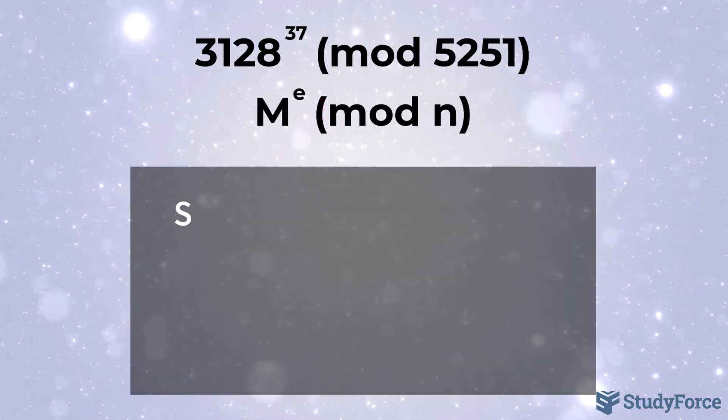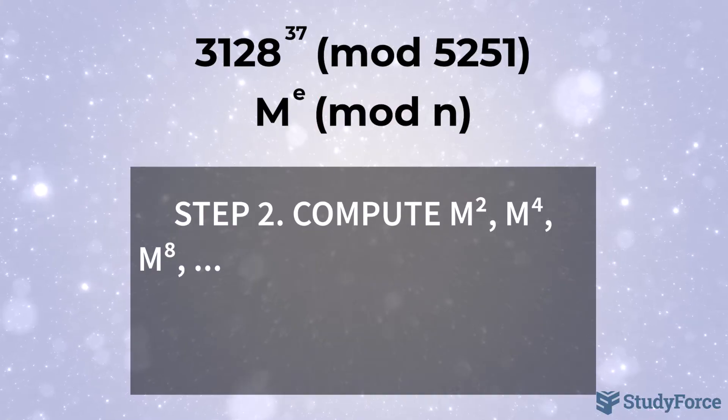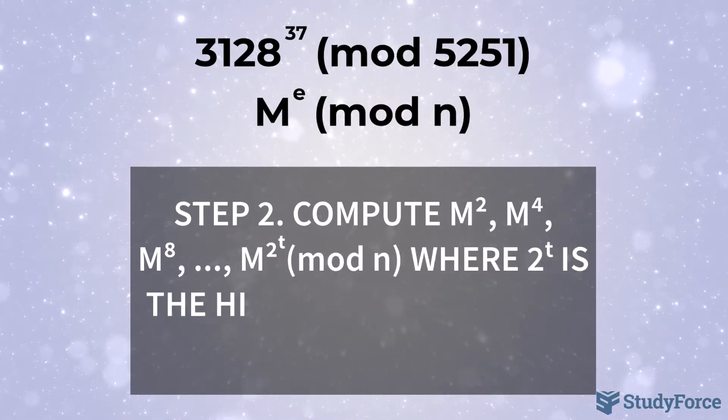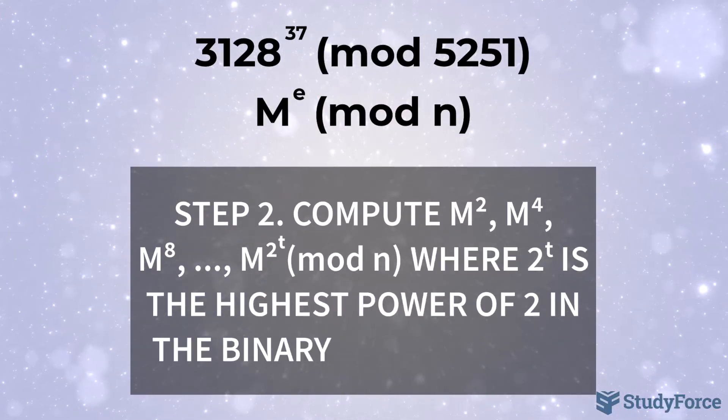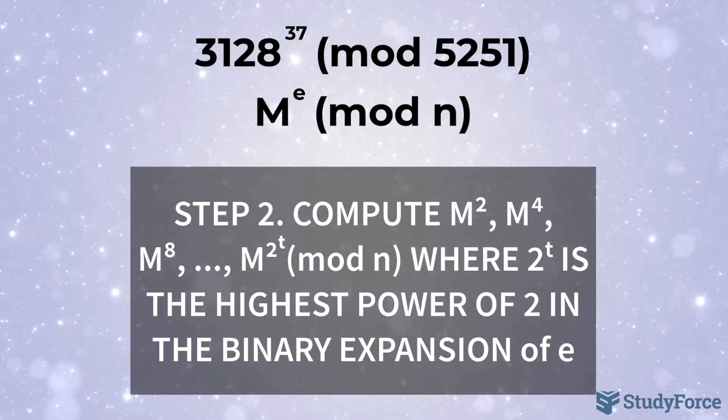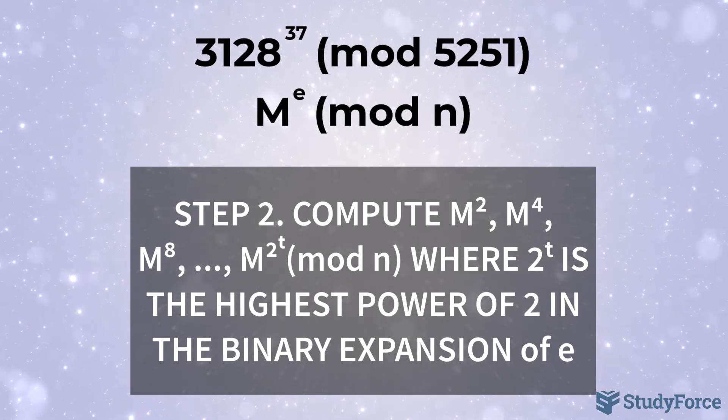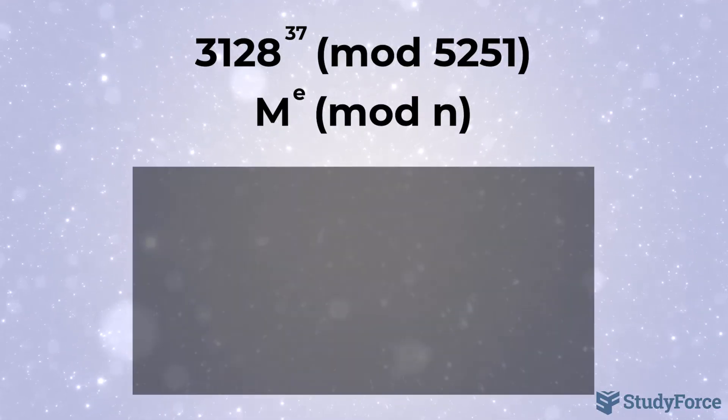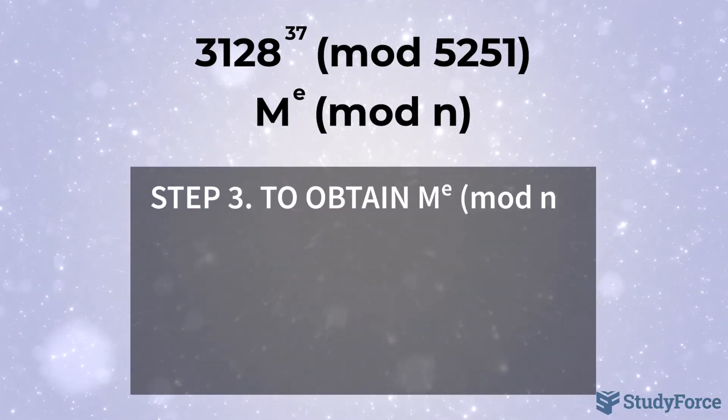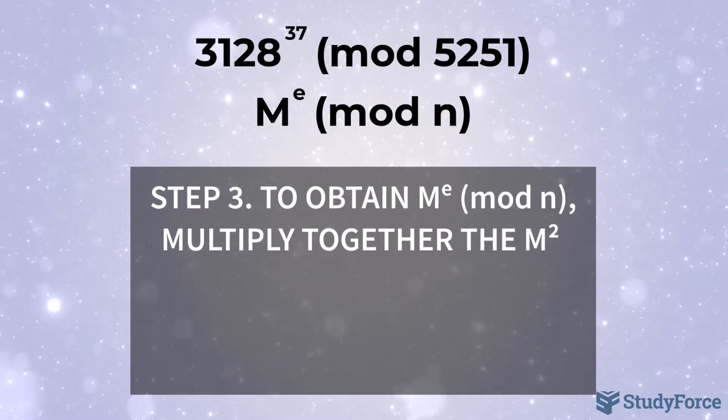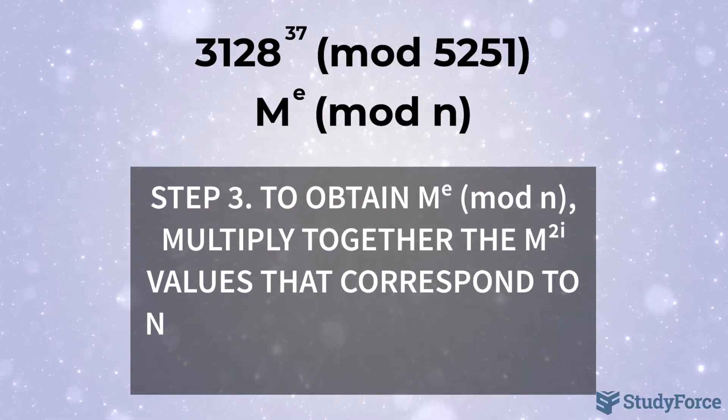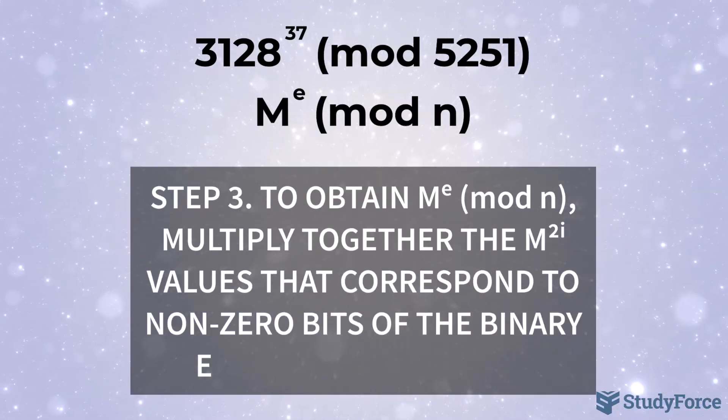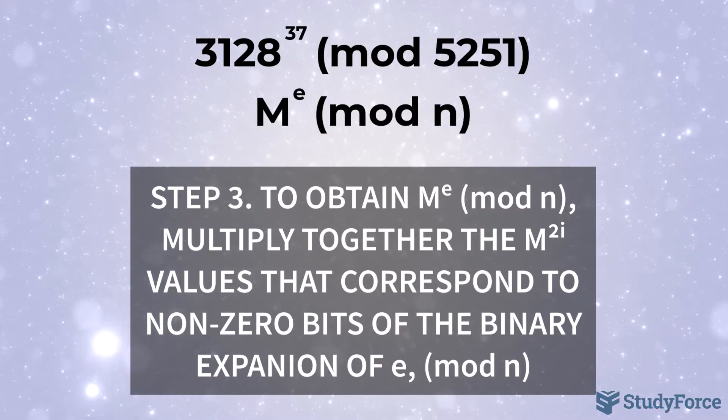In step 2, compute m^2, m^4, m^8 all the way to m^(2^t) mod n, where 2^t is the highest power of 2 in the binary expansion of e. Finally, to obtain m^e mod n, multiply together the appropriate m^(2^i) values that correspond to the non-zero bits of the binary expansion of e mod n.